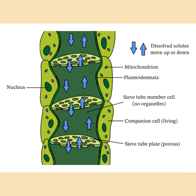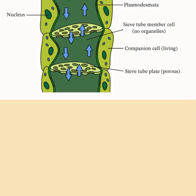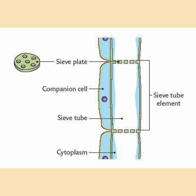The vessel consists of many sieve tube elements that run up the stem on top of one another. Sieve tube elements are living cells that contain a cytoplasm but there is no nucleus. The walls of sieve tube elements are made up of cellulose. Companion cells are present adjacent to sieve tube elements.